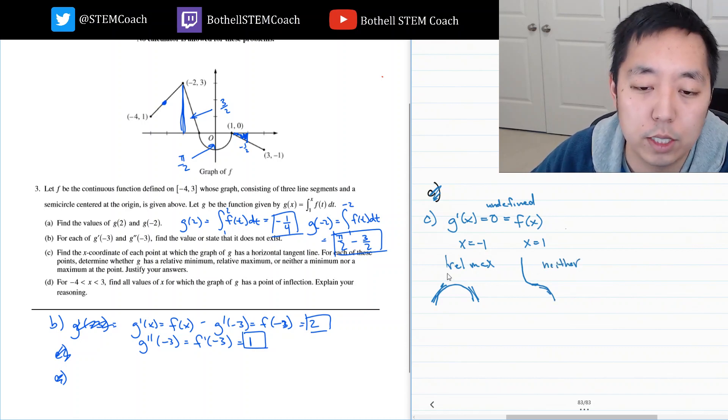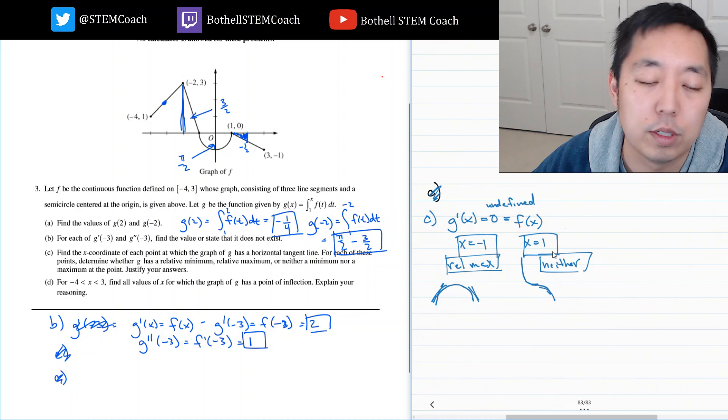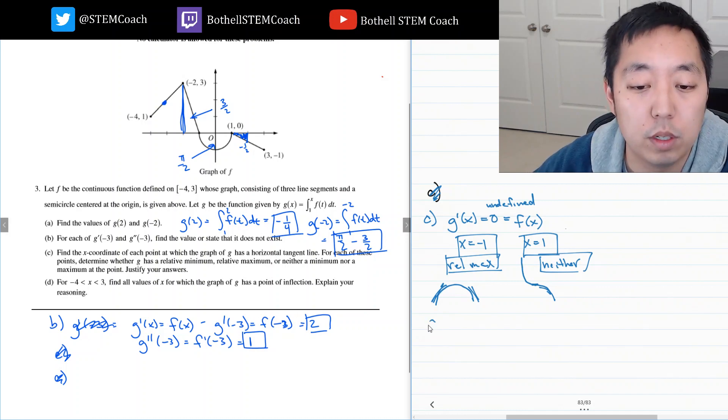And that's the same as G prime being negative. So, the slopes of G are negative here and here. So, it doesn't change sign. So, that means kind of like it looks like this. The slopes are negative, it hits zero right at x equals one and it continues being negative. So, this is neither. And your explanation would be that the slopes don't change signs.